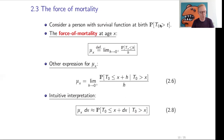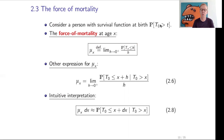Now we introduce an important concept: the force of mortality. It sounds abstract at first, but it is a very helpful tool for modeling survival. Consider a person with survival function at birth given by the probability that T0 is greater than t. The force of mortality is defined as follows: we compute the probability that Tx is less than or equal to h, divide by h, and take the limit as h goes to 0. This limit is called the force of mortality mu_x — the force of mortality at age x.